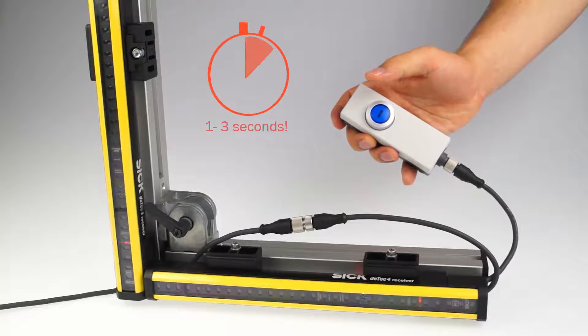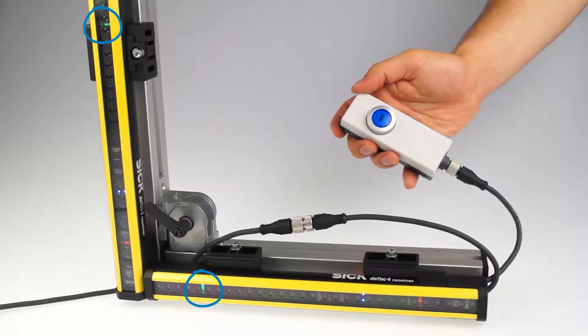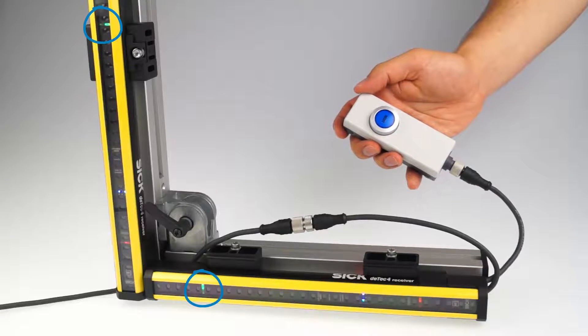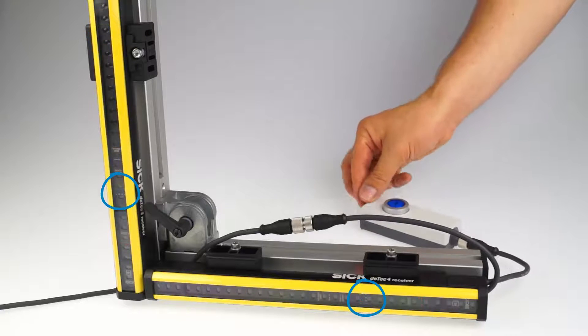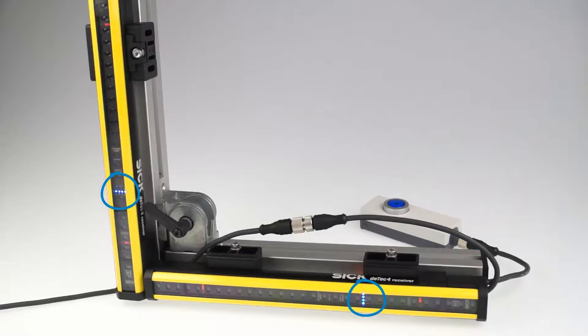To signal that the configuration has been successful, the device's field LEDs flash green. The blue alignment LED 4 also flashes to signal that the restart interlock is configured now. After another power cycle, the system starts up in the reset required state.